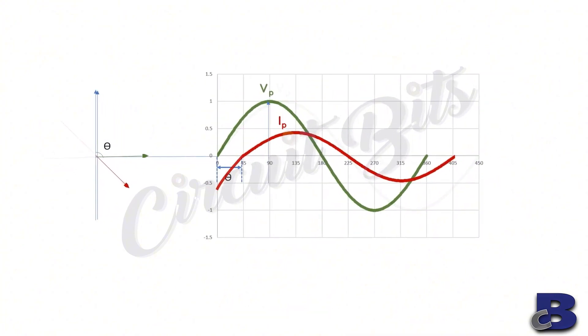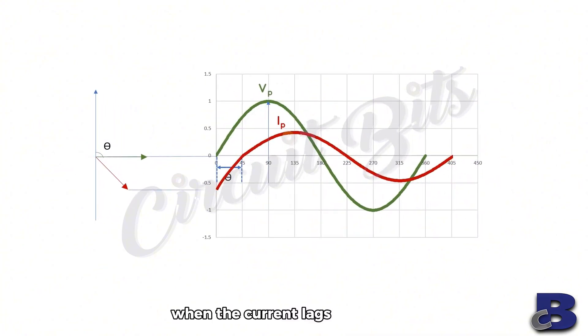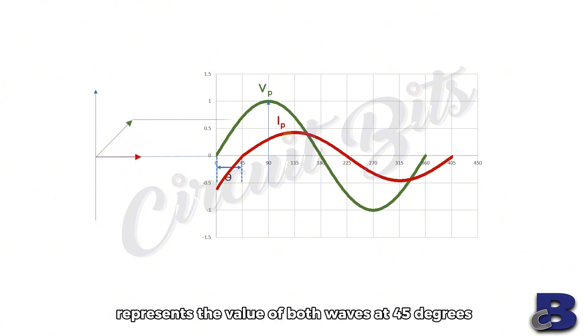For this out-of-phase wave, when the current lags the voltage, the phasor at this placement represents the value of the waves at zero degrees, and if rotated by 45 degrees, represents the value of both waves at 45 degrees.